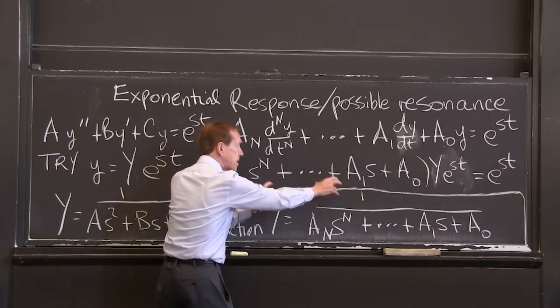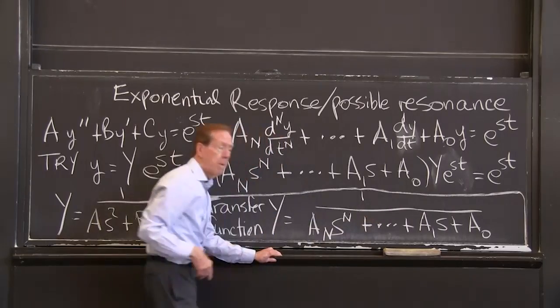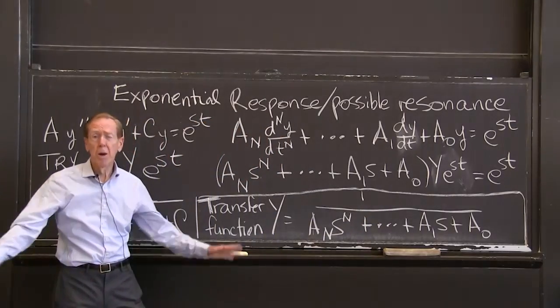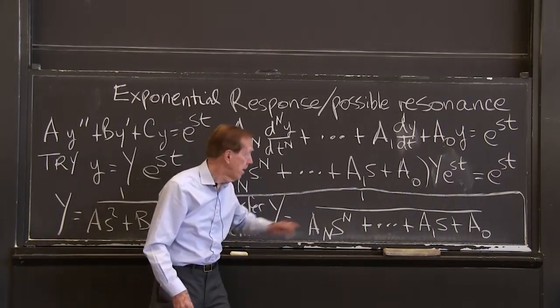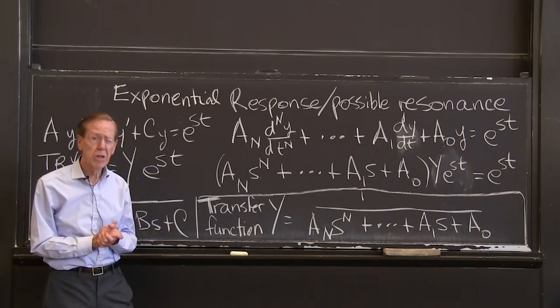Now I'm including that with any degree equation, nth degree equation. And what's the solution for y? Because e to the st cancels e to the st. That whole thing equals 1. I divide by this.